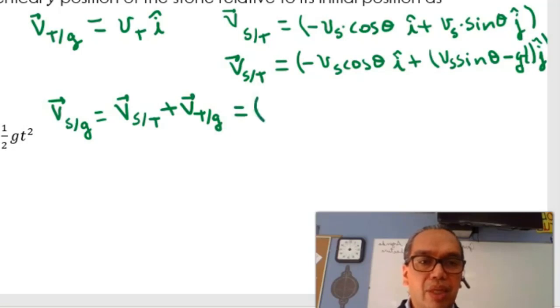That should be in the x direction vT minus vs cosine of theta, which is a constant value, but you have